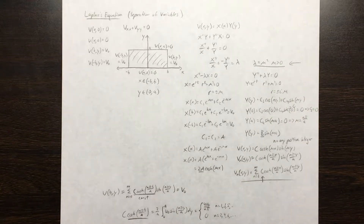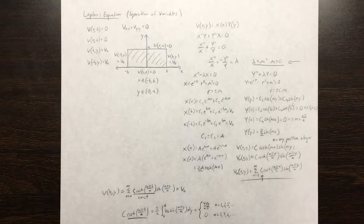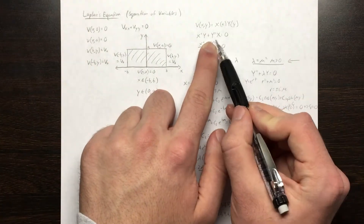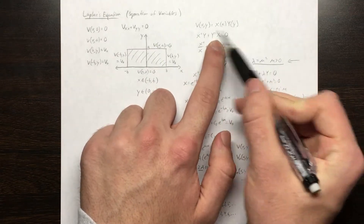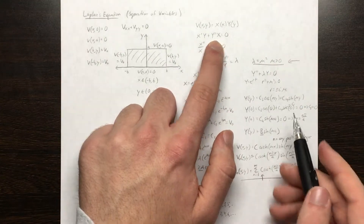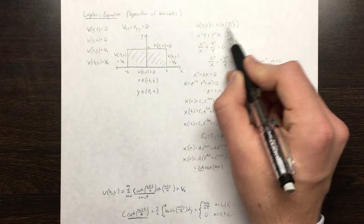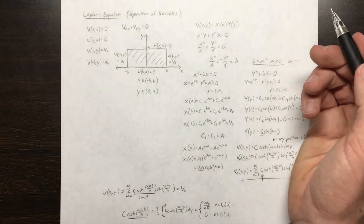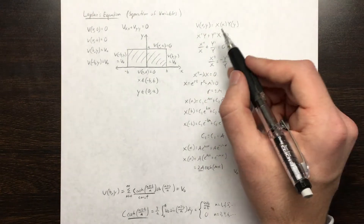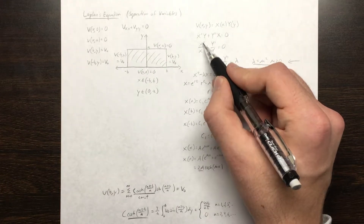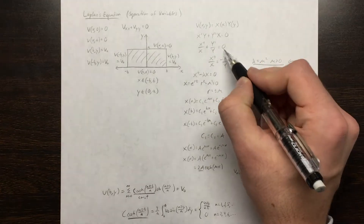Our solution will be an infinite series which converges to our potential function v(x,y) and satisfies Laplace's equation. If we take our solution and substitute it into Laplace's equation, we get this equation with two derivatives with respect to x plus two derivatives with respect to y equals zero. Then I'm going to divide this equation by X times Y, so the Y's cancel leaving X''/X, the X's cancel leaving Y''/Y, and zero divided by X times Y is zero.